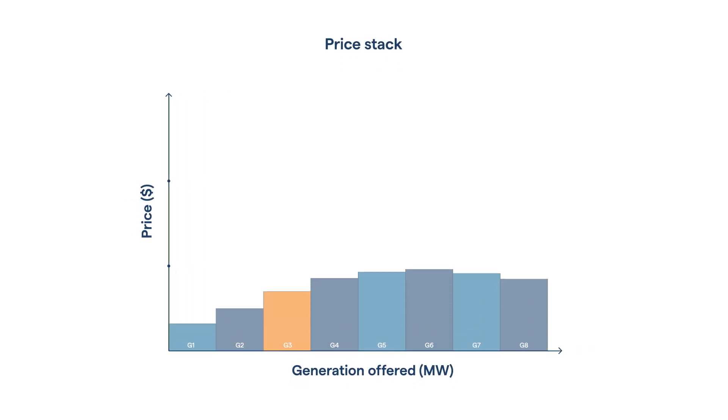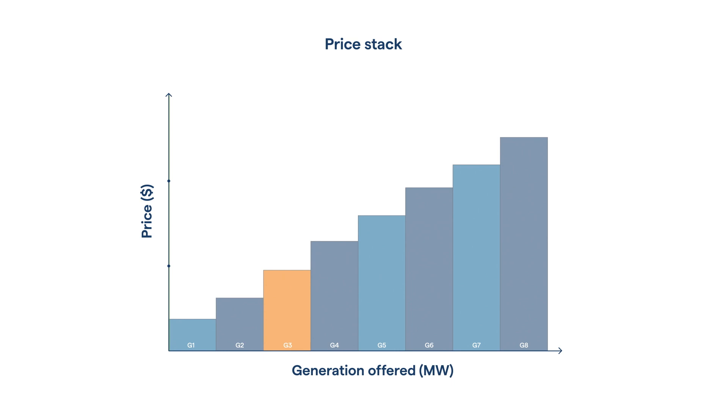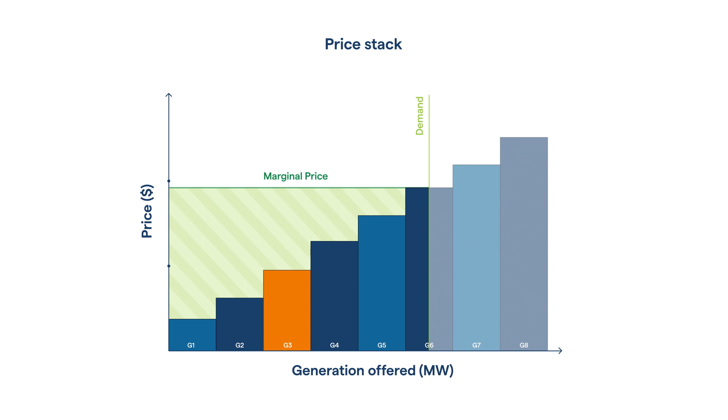Let's look at how applying discretion in this scenario may impact the market. The grid is unconstrained and the market is solved for optimal economic dispatch. G3 represents the slow ramping generation, reducing output due to the discretionary constraint. Because demand stays the same, the reduced G3 generation will be replaced by the next generation in the price stack.